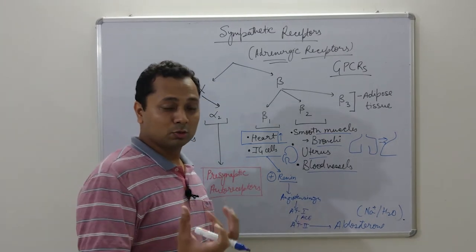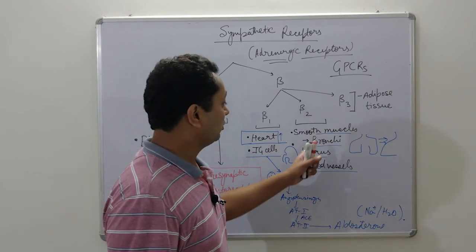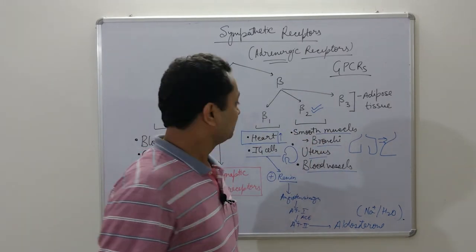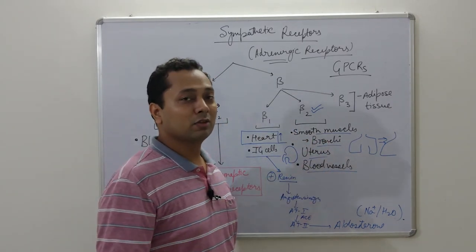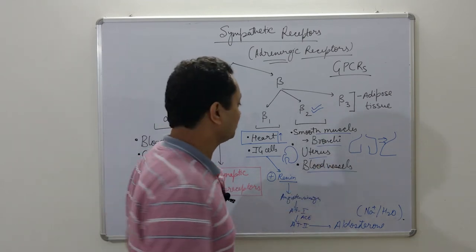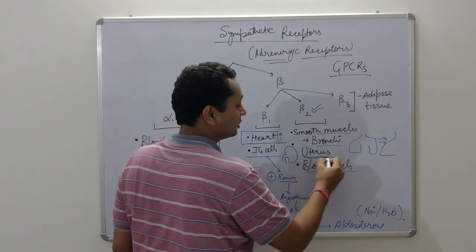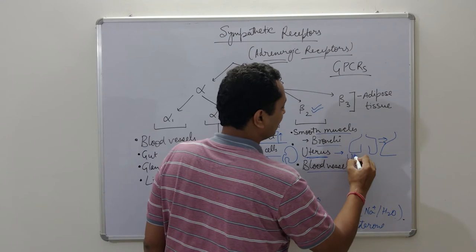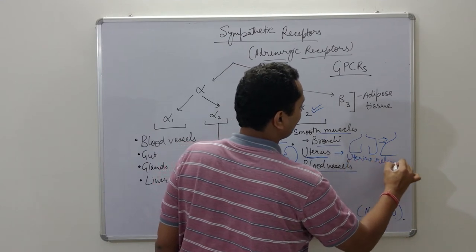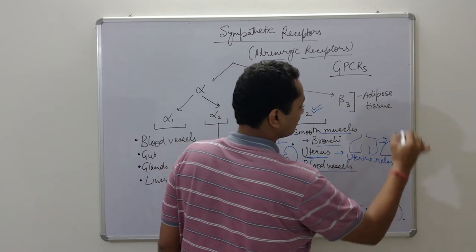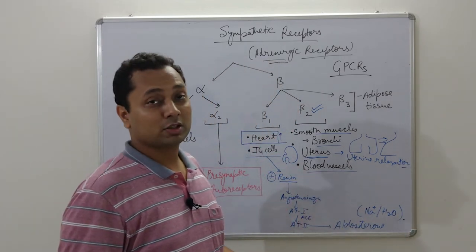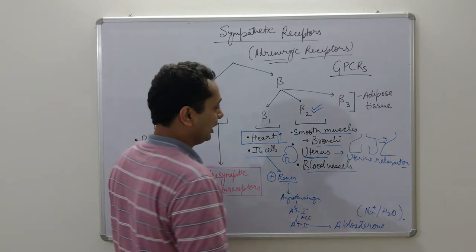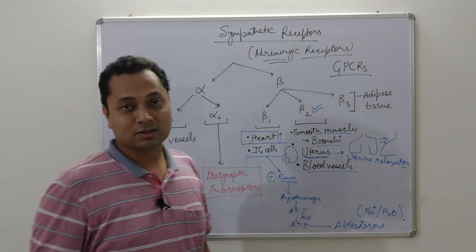In an asthmatic patient whose bronchi have constricted, we can stimulate the beta-2 receptors in the lungs, leading to bronchodilation and providing relief. For the uterus, which also has smooth muscles, beta-2 stimulation leads to uterine relaxation — beneficial in cases of premature uterine contractions. Blood vessels are also affected by beta-2 receptors.